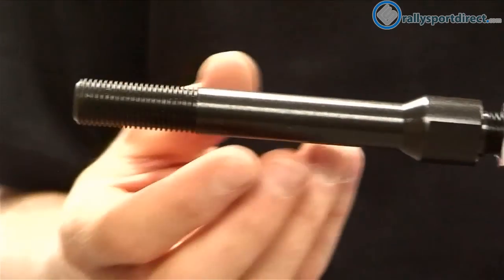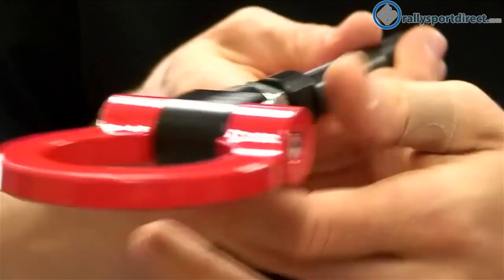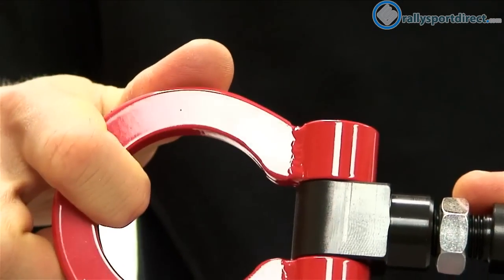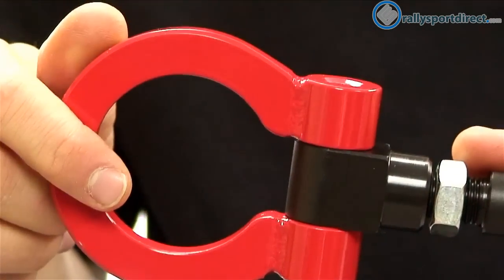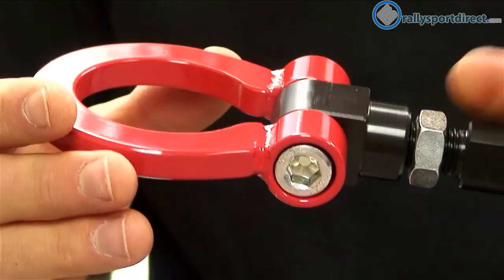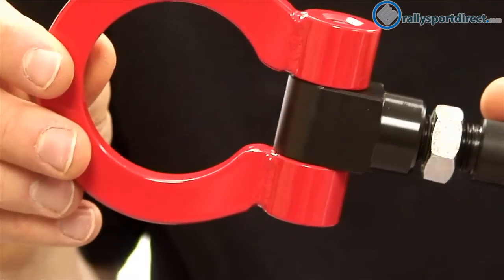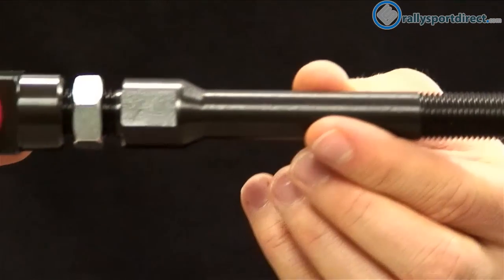And so what Beatrush has done is they've made this tow hook which will thread directly into your factory tow hook location, but you get the advantage of having this big red bright loop right here on the end, which is great for track workers because then they can spot it easier. And if you're just buying this to improve your looks, I think it looks very good as well.